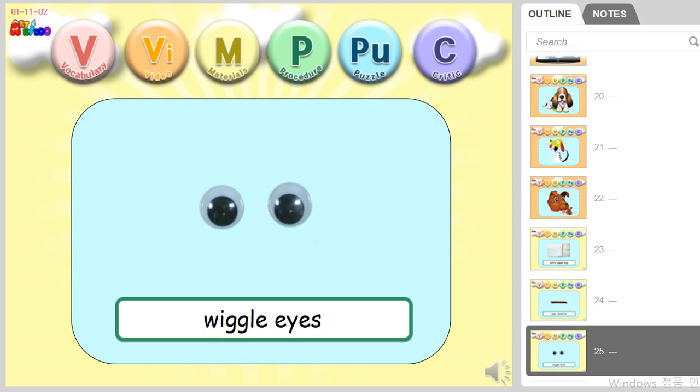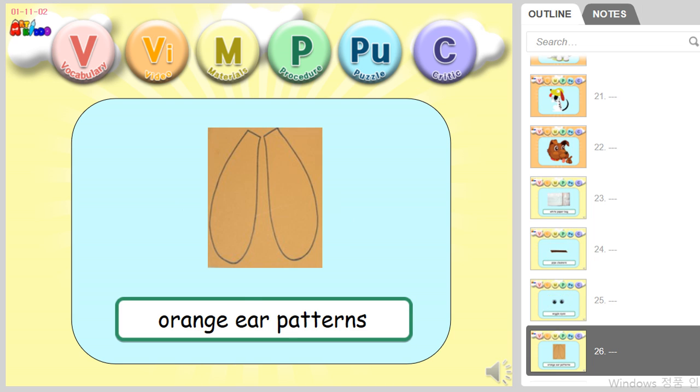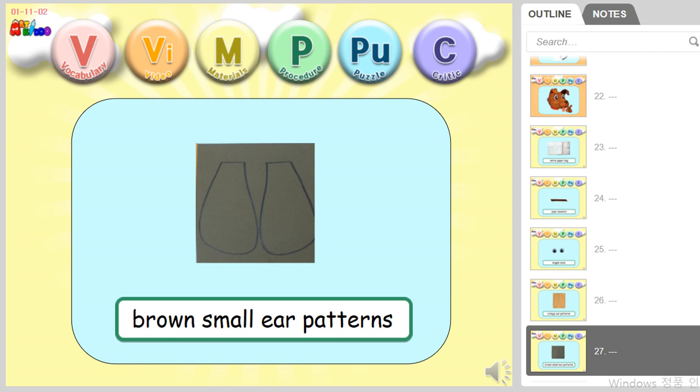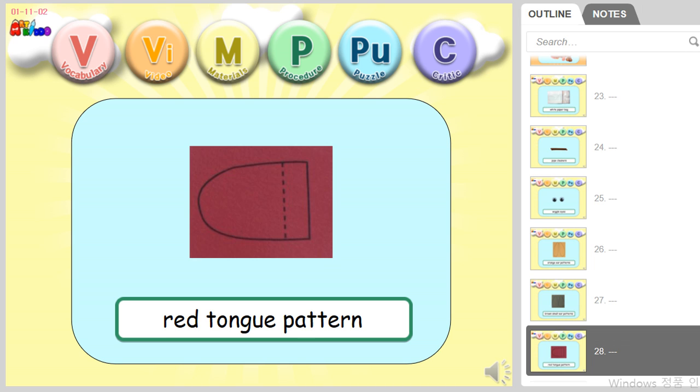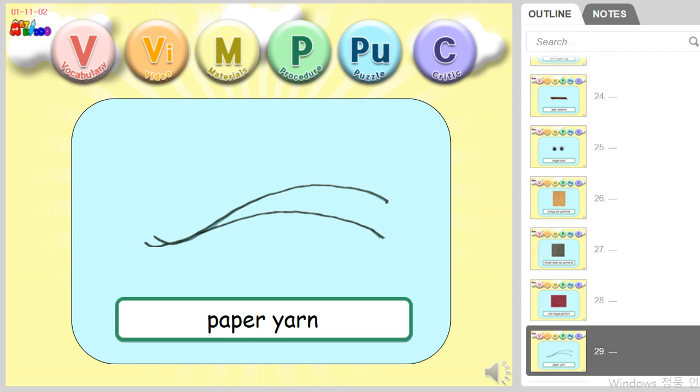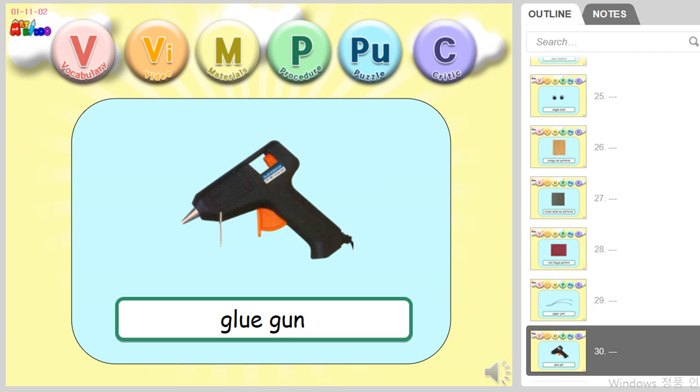Put wiggly eyes, orange ear patterns, brown small ear patterns, red tongue pattern, paper yarn, and glue.